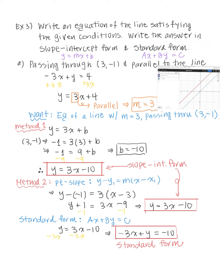The graph shows the given line (y equals 3x plus 4) and the blue line we wrote (y equals 3x minus 10) passing through 3 comma negative 1, confirming that these two lines are parallel to each other.